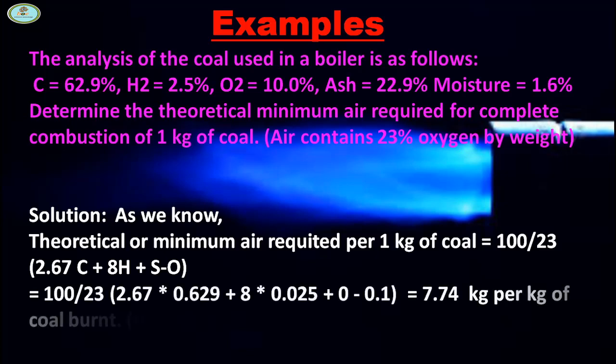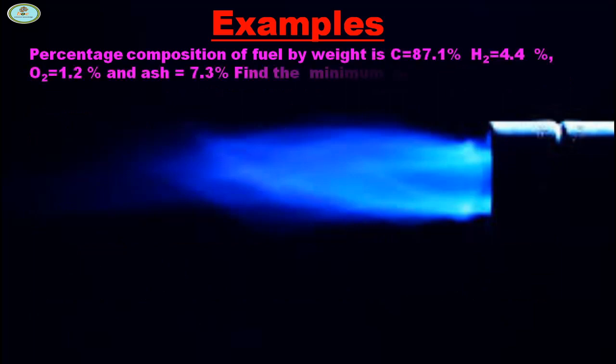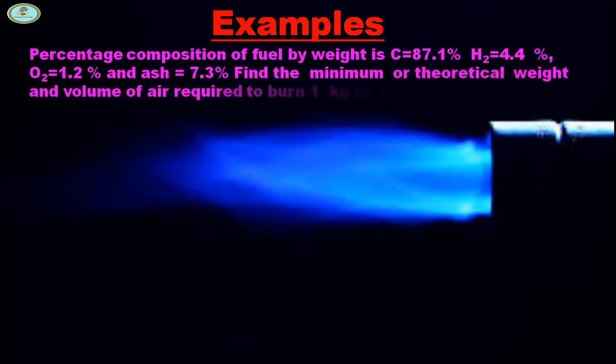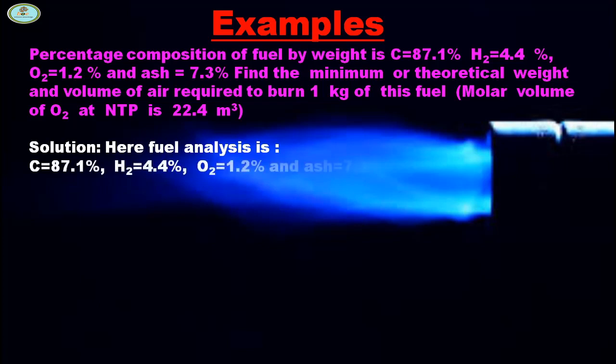Percentage composition of fuel by weight: C = 87.1%, H2 = 4.4%, O2 = 1.2%, S = 7.3%. Find the minimum or theoretical weight and volume of air required to burn 1 kg of this fuel. Molar volume of O2 at NTP is 22.4 m³.